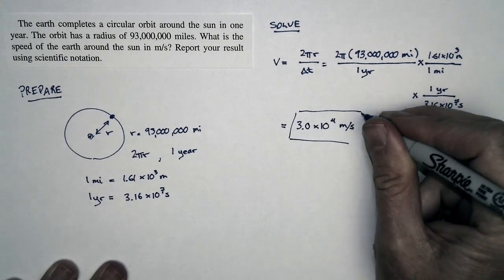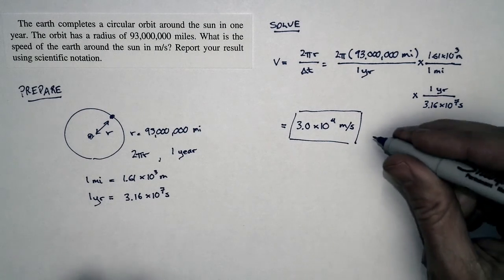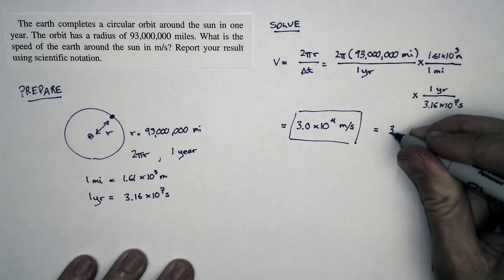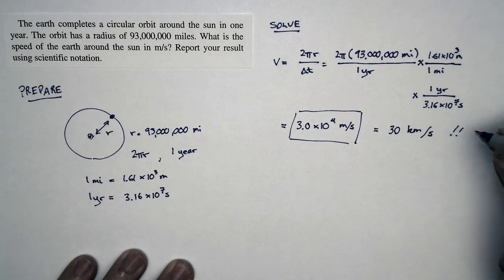That's a big speed. Let's think about this. This is 30,000 meters per second, or 30 kilometers per second. That's a high speed indeed.